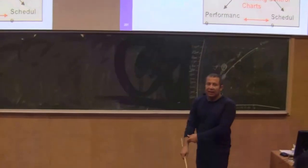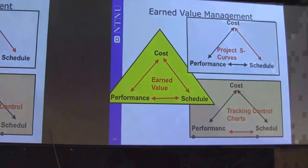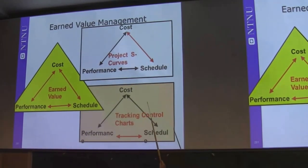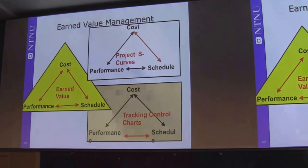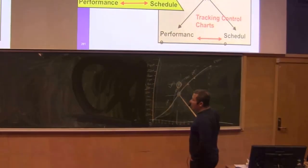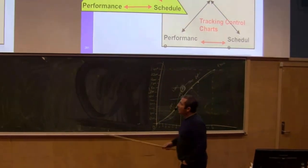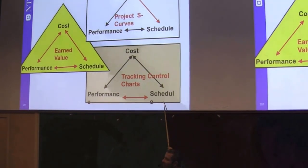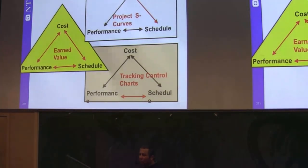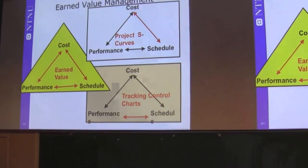As discussed in the previous lecture, there are different preferences for following up a project. The first method compares actual cost with scheduled budgeted cost, but this is not very effective because it doesn't tell us what we used the money for. The second method uses a tracking chart comparing planned amount of work with actual performance, but it overlooks how much money and resources were used. It only tells us about time.